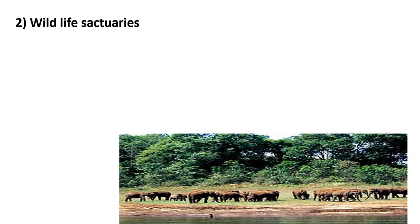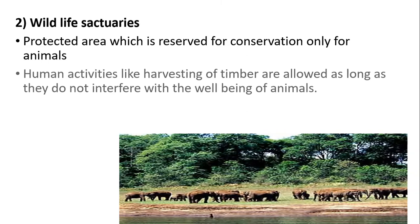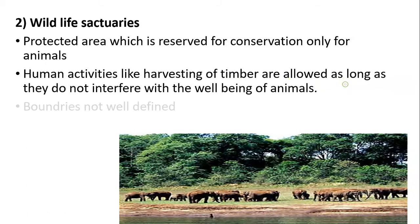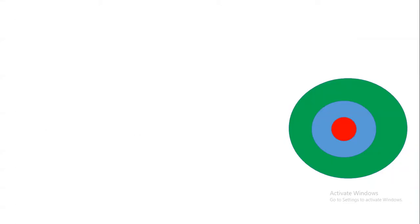Next, in-situ conservation includes wildlife sanctuaries. These are protected areas reserved for the conservation of animals. Human activities like harvesting of timber are allowed as long as they do not interfere with the well-being of animals. The boundaries are not well defined in these regions, and a controlled level of human interference such as tourist activity is permitted. There are a total of 544 sanctuaries present in India.